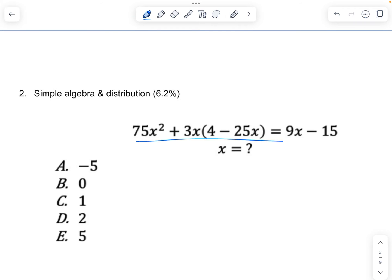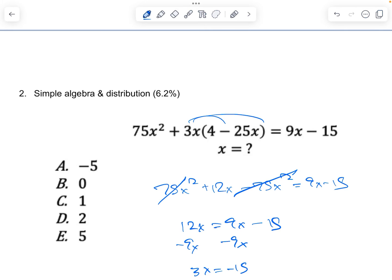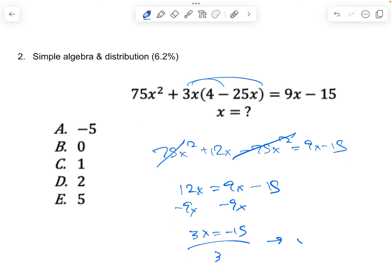Simple algebra and distribution. What's x? We're gonna distribute this to each of these. 75x squared plus 12x minus 75x squared equals 9x minus 15. These two cancel out. 12x is equal to 9x minus 15. Subtract 9x on both sides. 3x is equal to negative 15. Divide both sides by 3, x is equal to negative 5. Key is make sure you distribute properly and ensure that you carry negatives down as needed like I did to the negative 75x squared here.